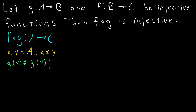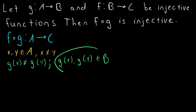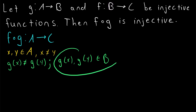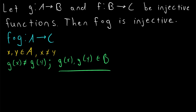Since G maps elements to B, we know that G of X and G of Y are distinct elements of the set B — that's the codomain of G. So G sends X and Y to distinct elements in B. And of course, B is the domain of F, so these are distinct elements of F's domain. G of X is not equal to G of Y, and they are both elements of B.